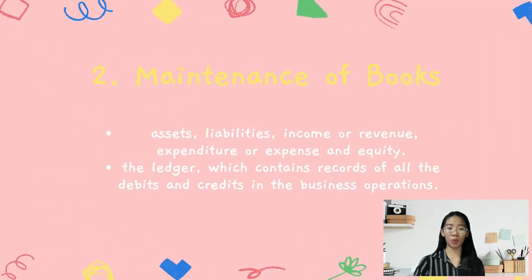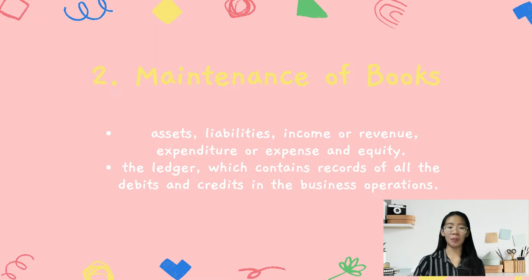The second step is maintenance of books. All details from documents such as invoices, receipts, credit notes, or petty cash vouchers should be recorded in the books of original entry, and they also need to be kept safely for future references. After recording all the necessary details in the books of entry, they will be transferred to the well-known basic book of accounts — the ledger — which contains records of all the debits and credits in the business operations.